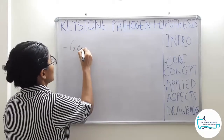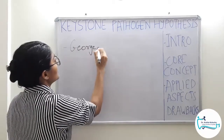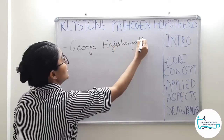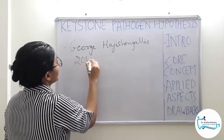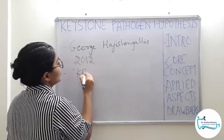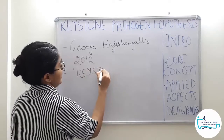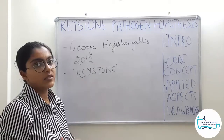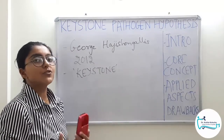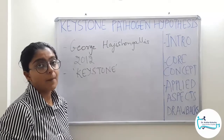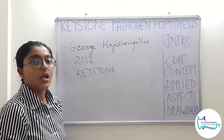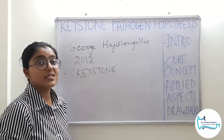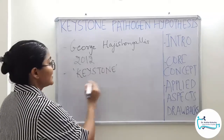George Haji Shingalis in the year 2012 gave the Keystone Pathogen Hypothesis, which focuses on Keystone Pathogens. A Keystone Pathogen is one which is present in low levels or low abundance and is still able to cause disease. This is the difference between a Keystone Pathogen and an Ordinary Pathogen. An Ordinary Pathogen triggers inflammation or causes disease when present in abundance or higher levels, whereas the same disease and inflammation can be caused by Keystone Pathogens when present in low levels.